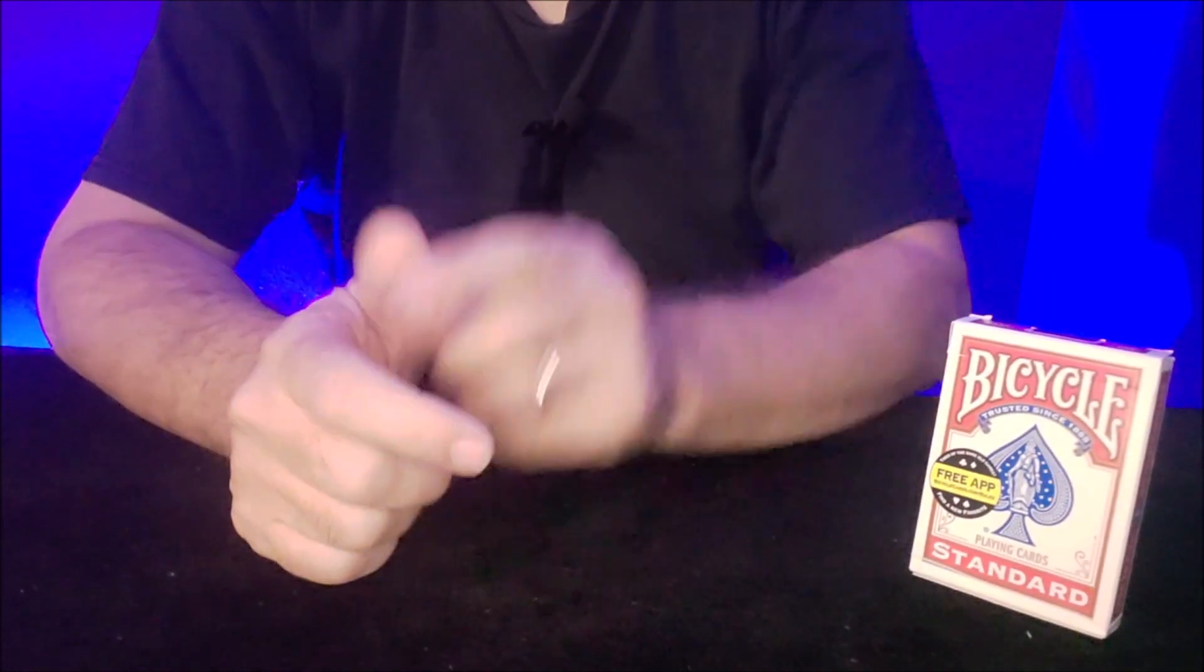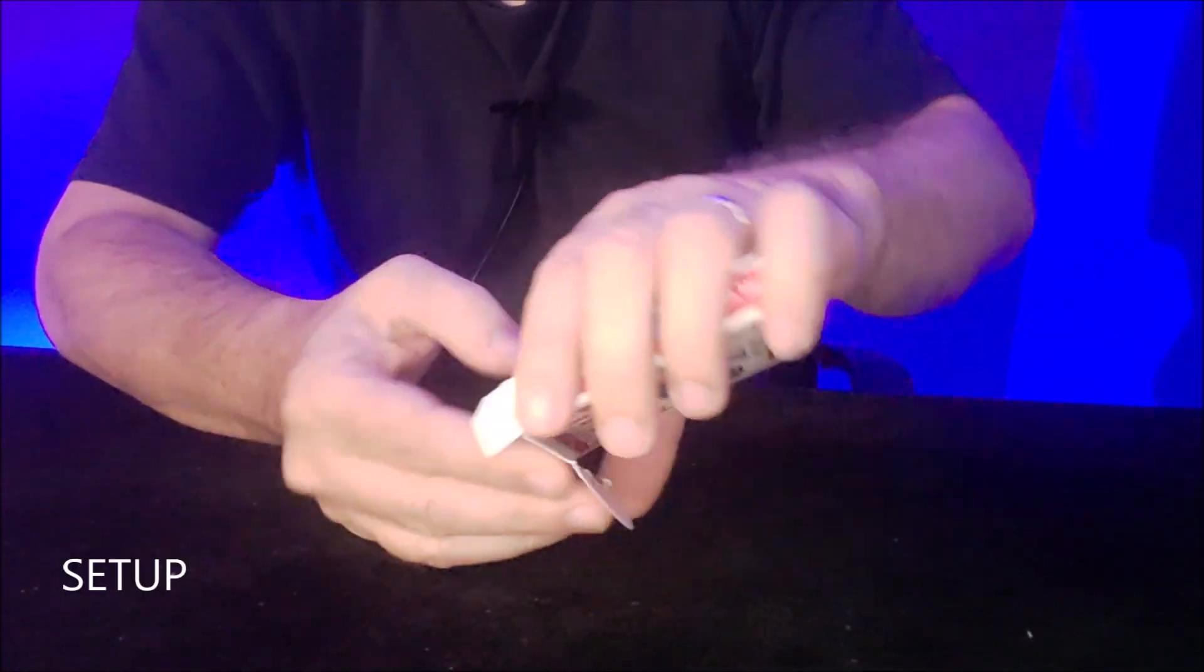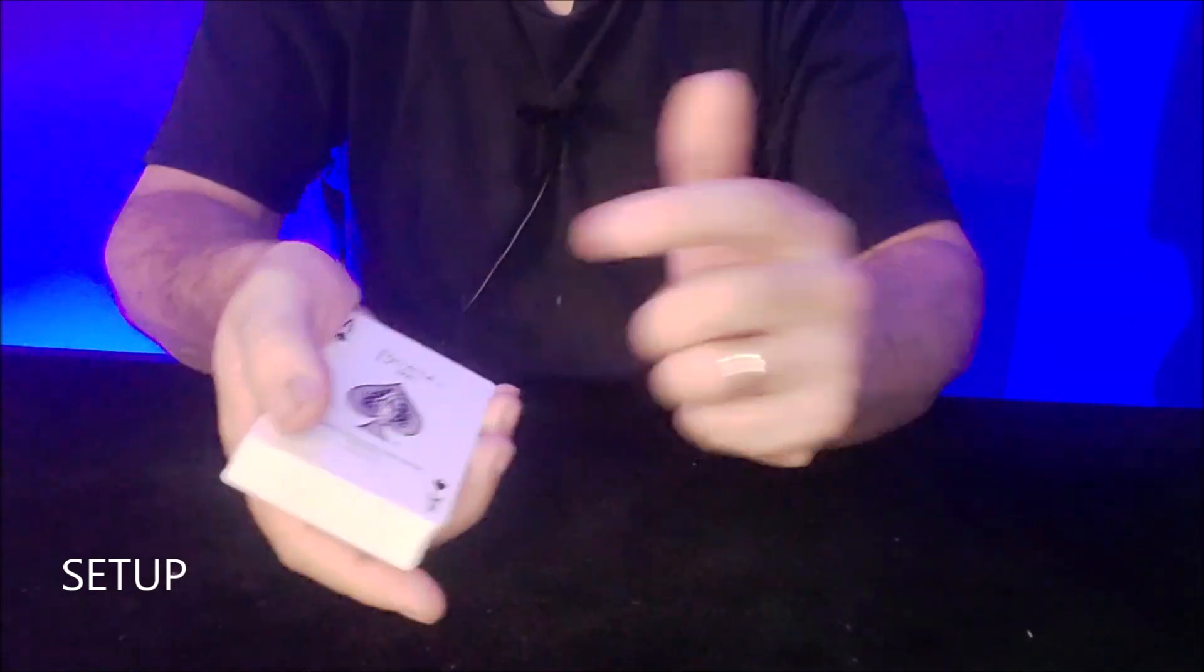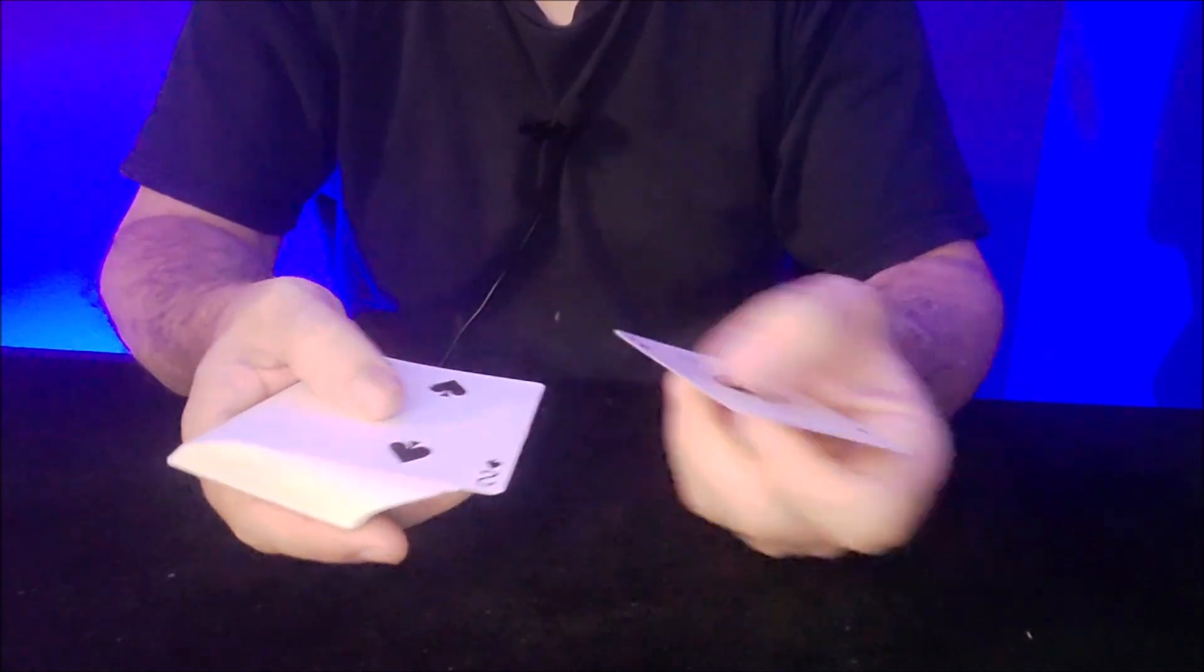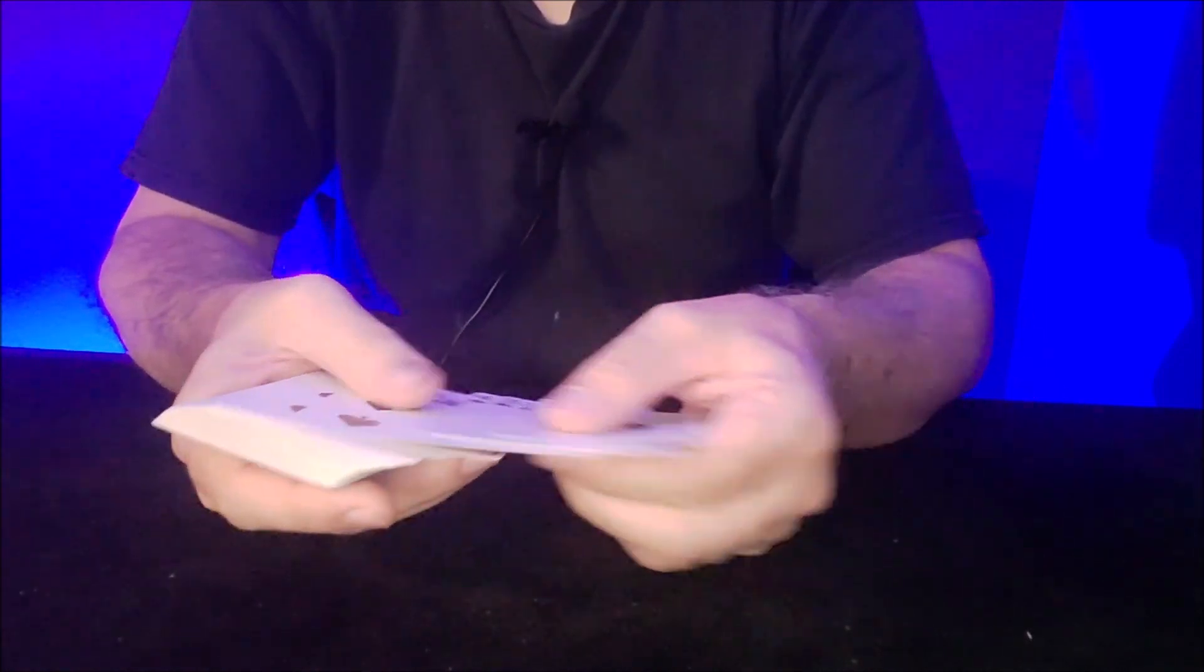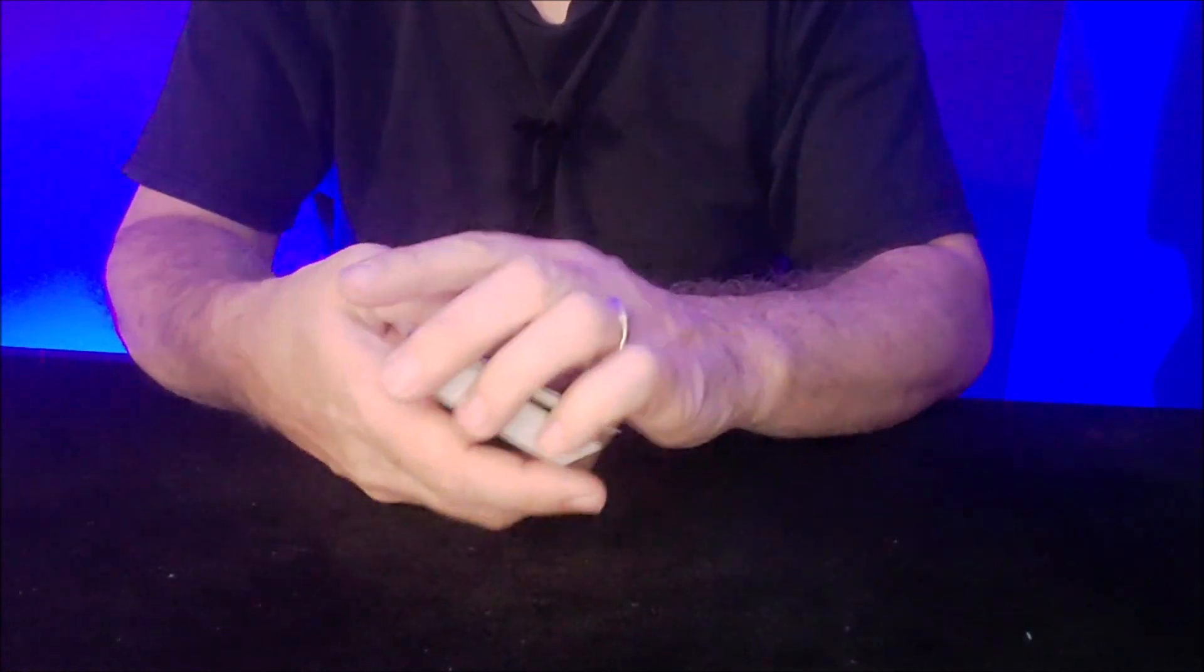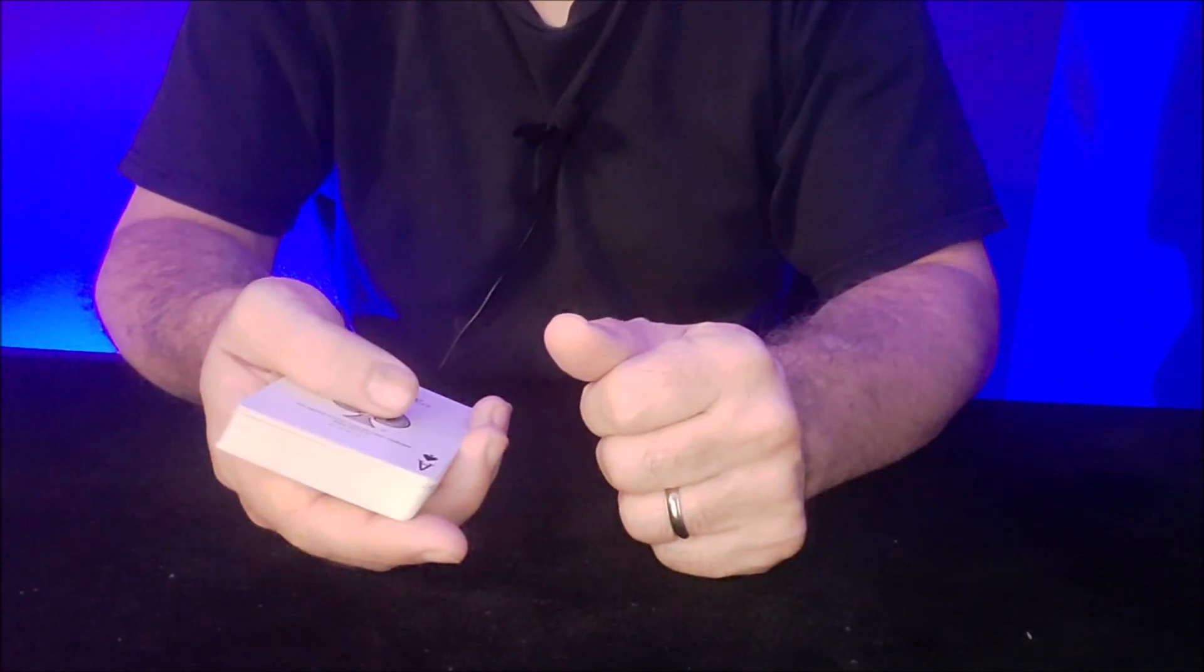So first, the setup. The setup is we have ace through 10 on the bottom of the deck in order of all the same suit. So I have ace, 2, 3, 4, 5, 6, 7, 8, 9, 10. And we want to make sure that it's a suit you're going to remember.